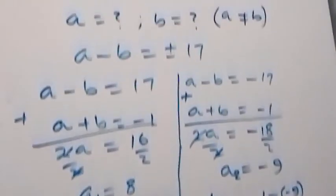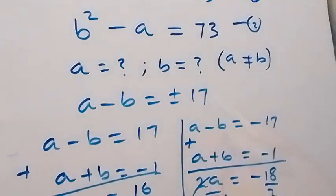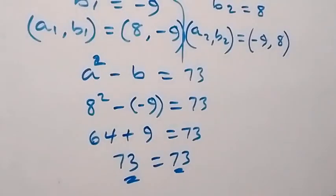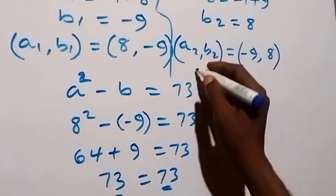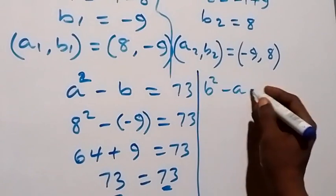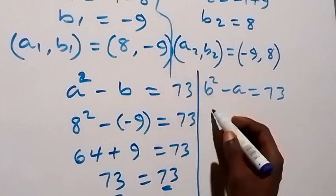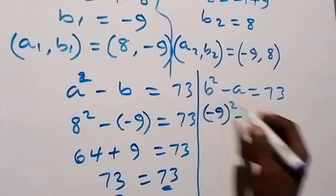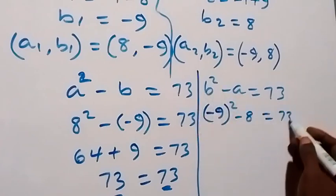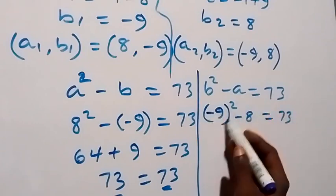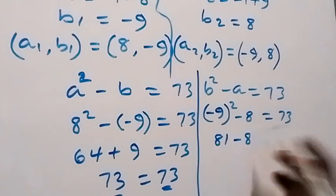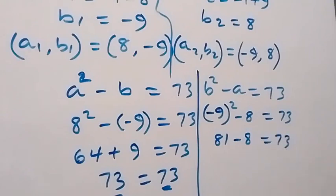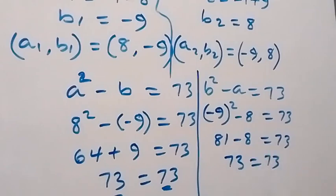Let's also check equation 2, which is b squared minus a equals 73. Using the first solution, b is minus 9, so minus 9 squared minus 8 should equal 73. Minus 9 squared is 81, and 81 minus 8 equals 73, which equals 73. The left hand side equals the right hand side, and this will also be true for the second set of solutions.